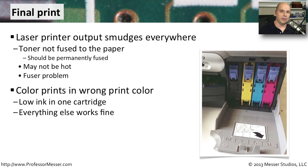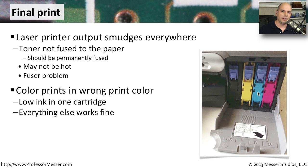If you're creating color output and notice the colors are off — maybe one particular color is much stronger than the others — you probably just have one color that is getting a bit low. On an inkjet printer there are different color cartridges, and if you get low on one particular color, the other colors will appear much stronger. Simply replacing the low ink cartridge will usually solve that problem.